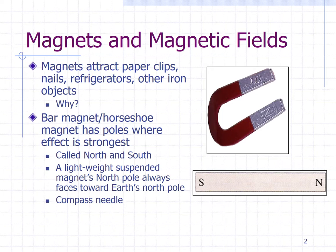If you were to suspend a lightweight magnet from a string, the north pole of that magnet will always point toward Earth's north pole and that's essentially a compass needle. So if you've tried that experiment then you know what I'm talking about.